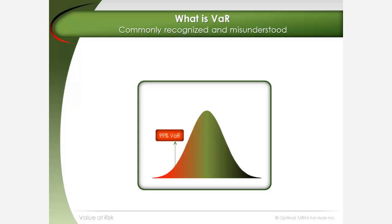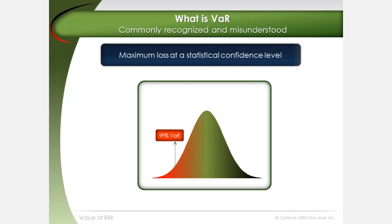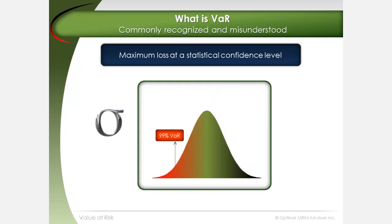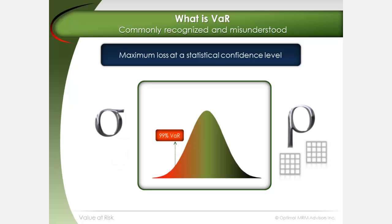VAR is expressed as a threshold number that indicates the maximum risk of loss at a set statistical confidence level. For example, a one-day 99% portfolio VAR of $1 million indicates that, on the downside, the portfolio would be expected to lose not more than $1 million on any given day in 99 trading days out of 100. VAR reflects the volatility of returns of individual investments and the correlation between them.